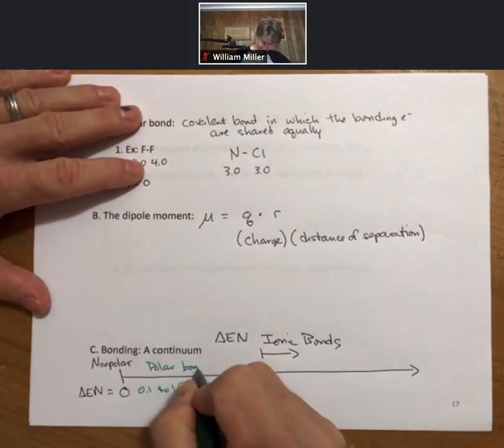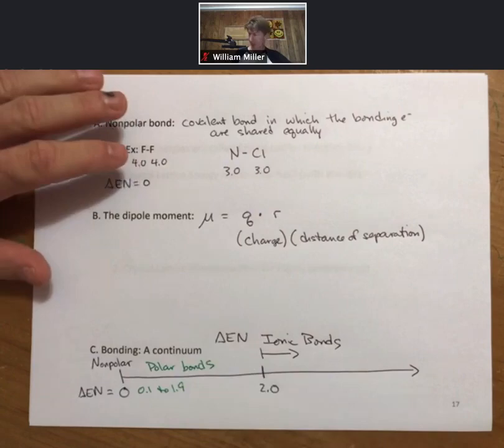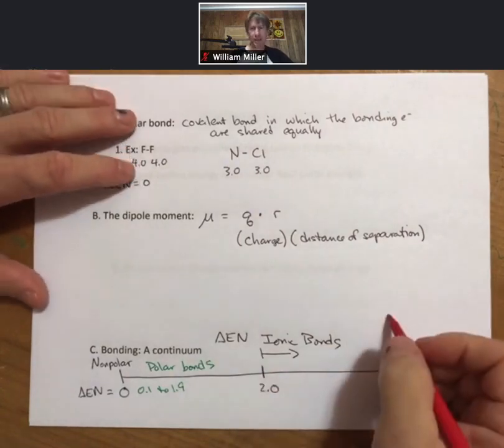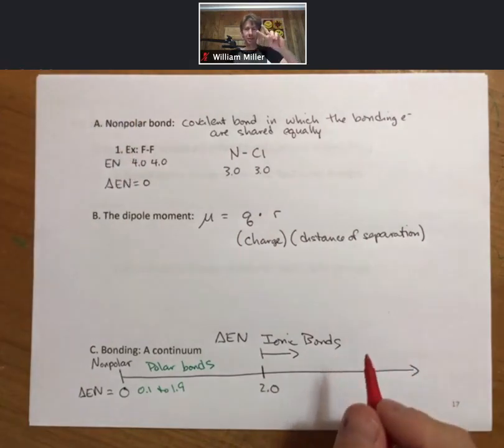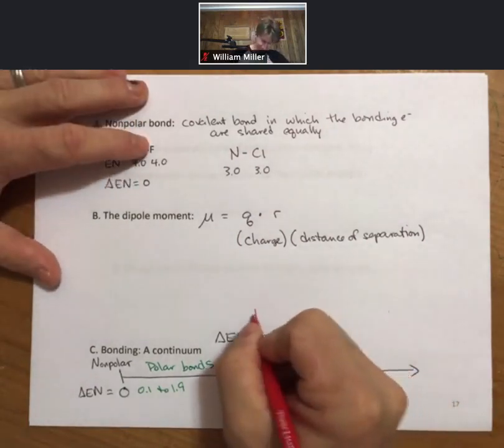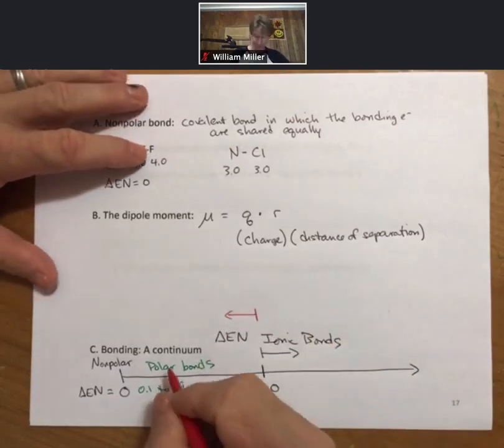Just so you know, in chemistry—at least in this course—the world is broken into two types of bonds: ionic bonds and covalent bonds.